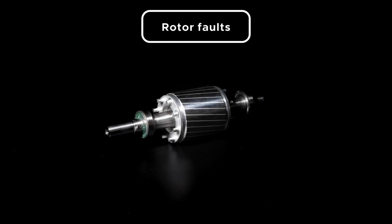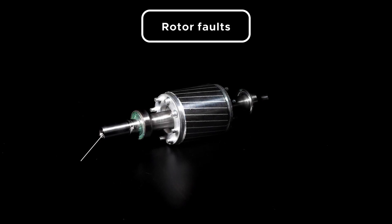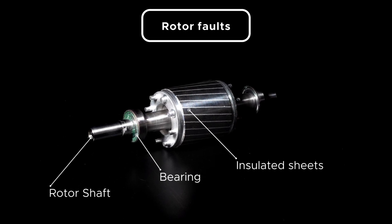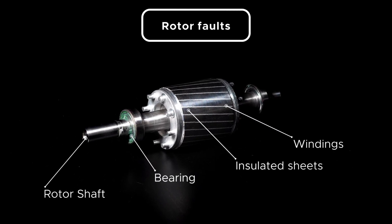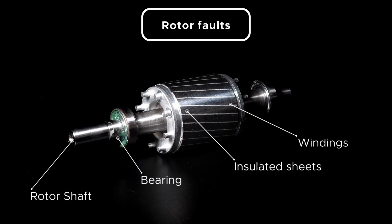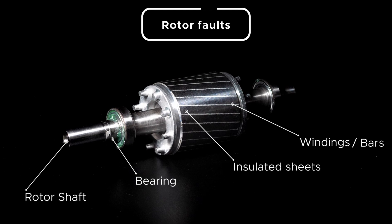Rotor faults. The rotor of an asynchronous motor consists of a shaft, insulated sheets pressed on the shaft which form the rotor magnetic circuit and windings. Mostly the winding of the rotor consists of a cage structure which is formed by bars which are connected at the ends.